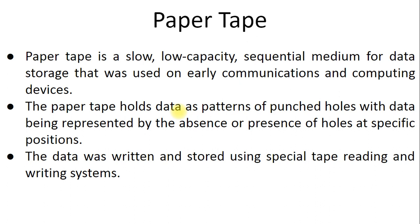The paper tape holds data as a pattern of punched holes, with data being represented by the absence or presence of holes at specific positions. Data is stored on the paper - on the paper there are holes, and wherever a hole is filled, that is how data is stored. This data is decoded by a specific machine, and the data is in digital form, that is binary form - data is stored in that form.